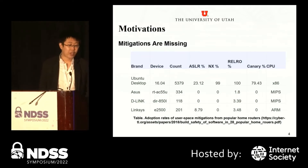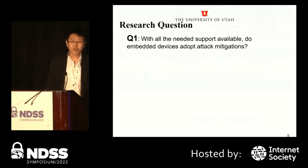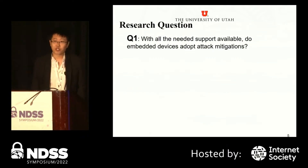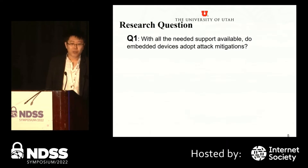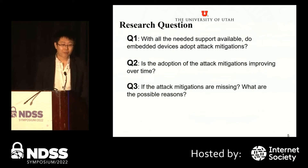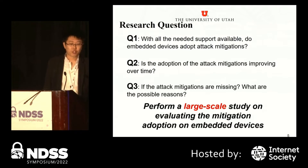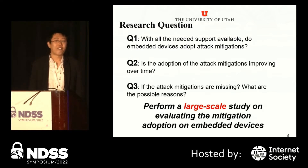This motivates us to extend this study into a much larger scale. In this paper, we focus on three research questions. The first is: do embedded devices adopt attack mitigations? Second, is the adoption of attack mitigations improving over time? And third, if the attack mitigations are missing, what are the possible reasons? To answer these questions, we perform a large-scale study on evaluating mitigation adoption on embedded devices.